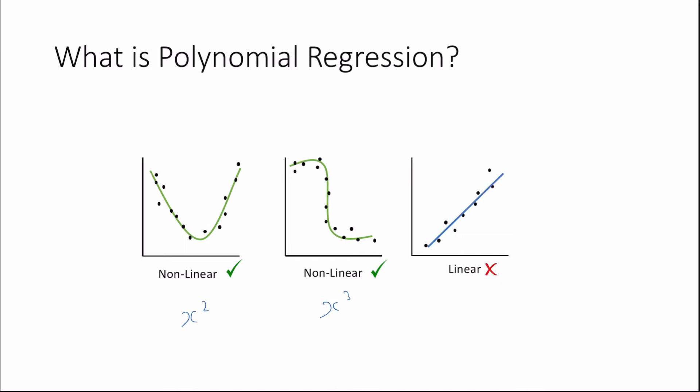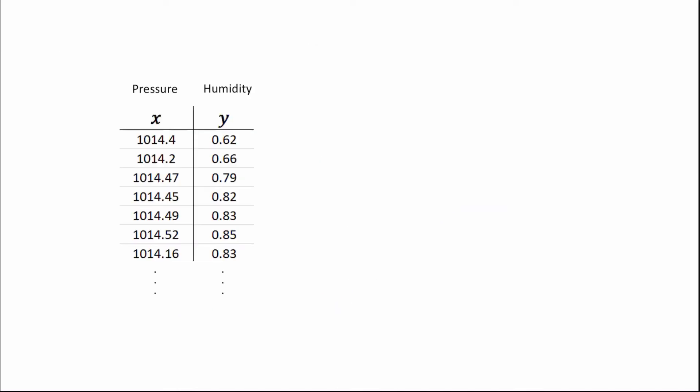So let's now go for an example of how polynomial regression works. Here we have our pressure and humidity data. And when we plot the data, it looks something like this. With pressure and humidity, we can only really form a simple linear regression model of y hat equals theta zero plus theta one x, which if we plotted on our data, would simply just be a straight line.